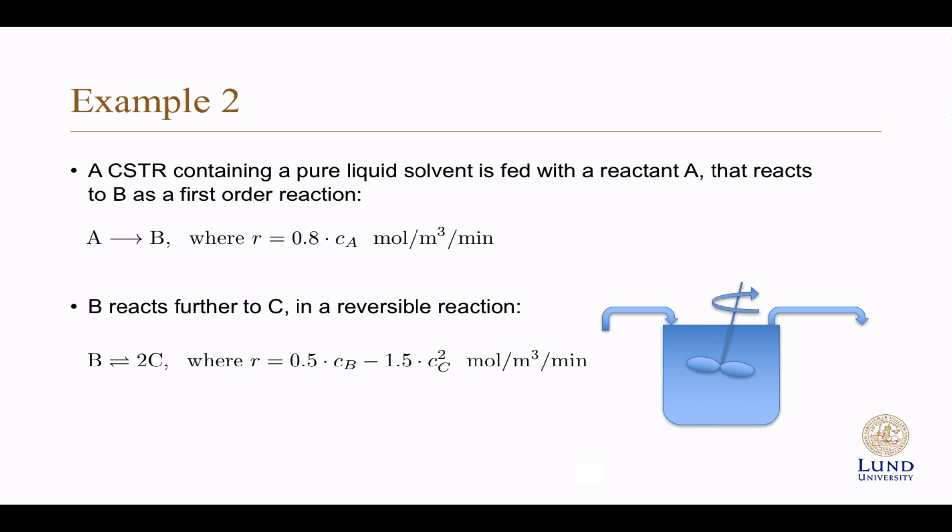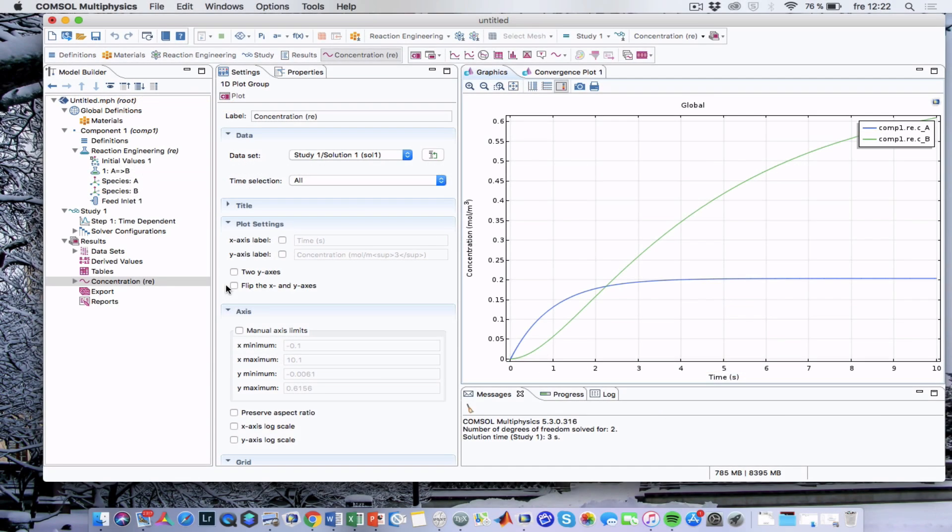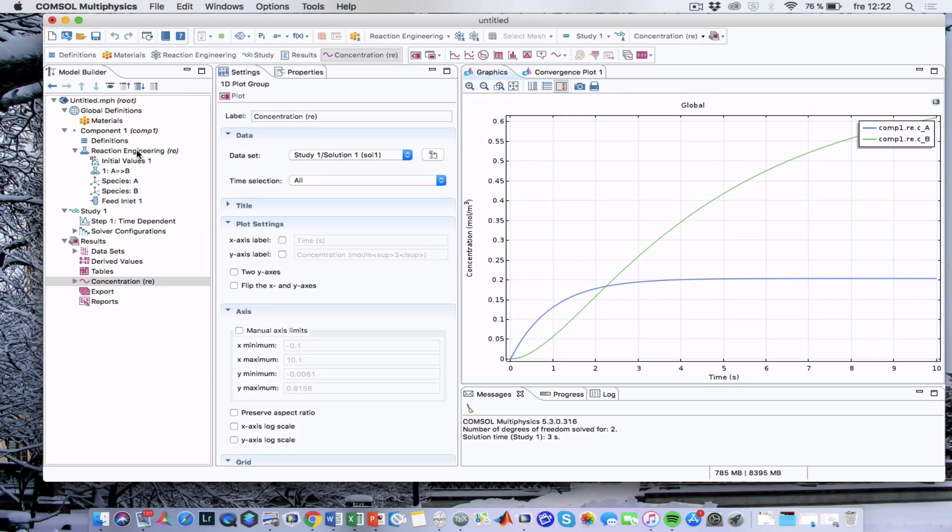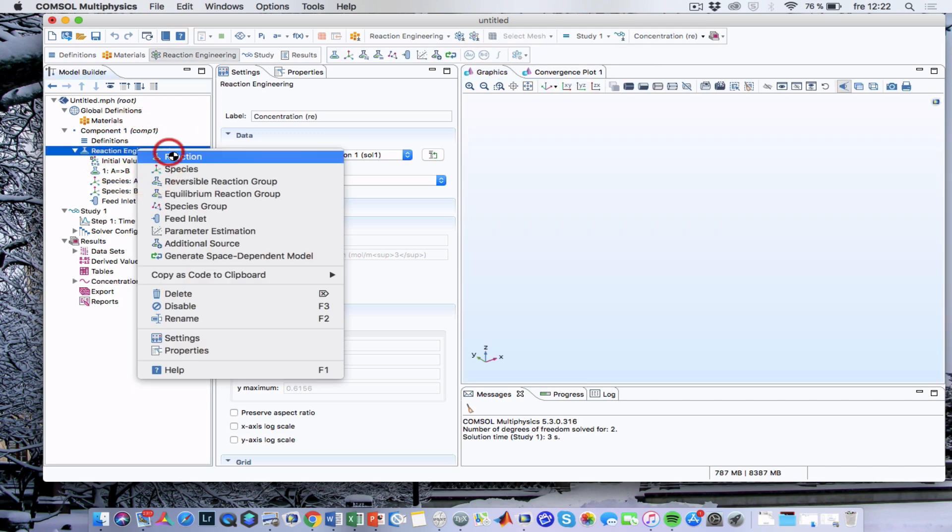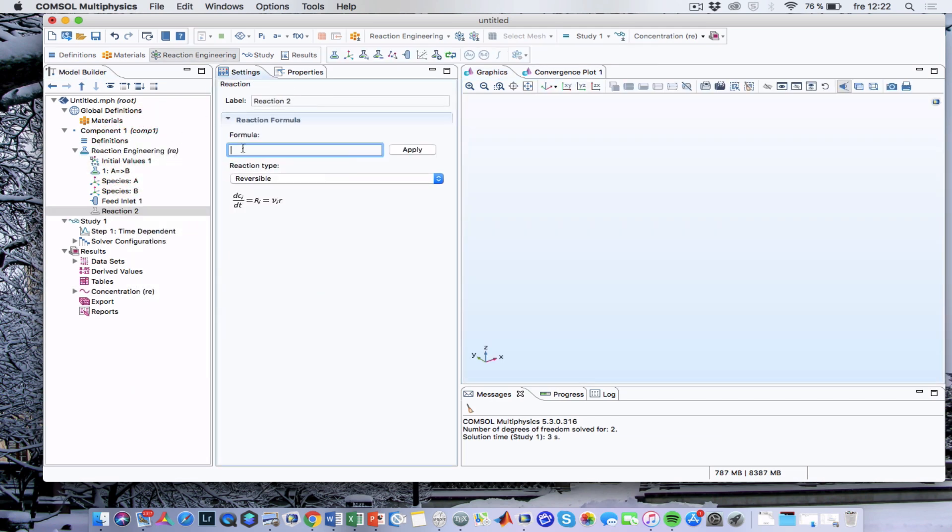In my next example, I will add a reaction B reacts to C in a reversible reaction with a forward rate and a backward rate that is of second order. To do this in COMSOL, you right-click on reaction engineering, add a reaction B reacts reversibly to 2C.